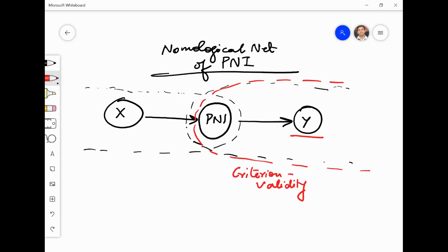I have seen some papers also where they are taking two-factor criteria to have this criterion validity. Yeah, so that will also be called as criterion as well as nomological validity testing.